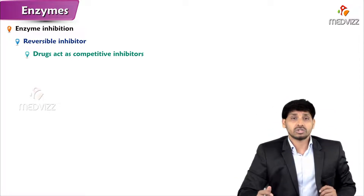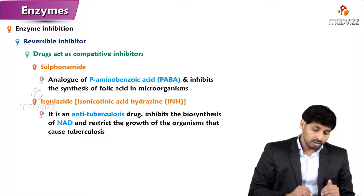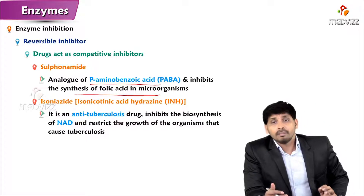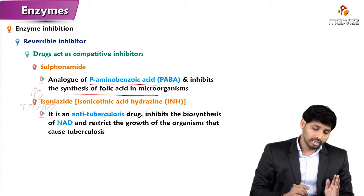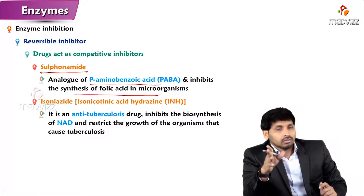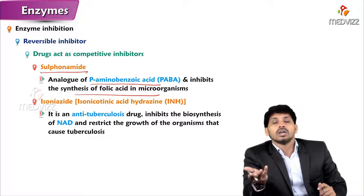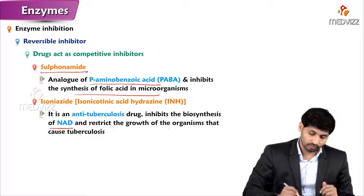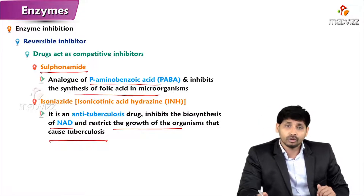Many drugs act as competitive inhibitors to treat various disorders. Sulfonamide is an analog of para-aminobenzoic acid and inhibits folic acid synthesis — since folic acid is essential for DNA synthesis, the microorganism cannot survive. Isoniazid is an anti-tuberculosis drug that inhibits biosynthesis of NAD and restricts the growth of organisms causing tuberculosis. However, isoniazid can also inhibit NAD synthesis from tryptophan in humans, creating competition with enzymes involved in NAD synthesis.